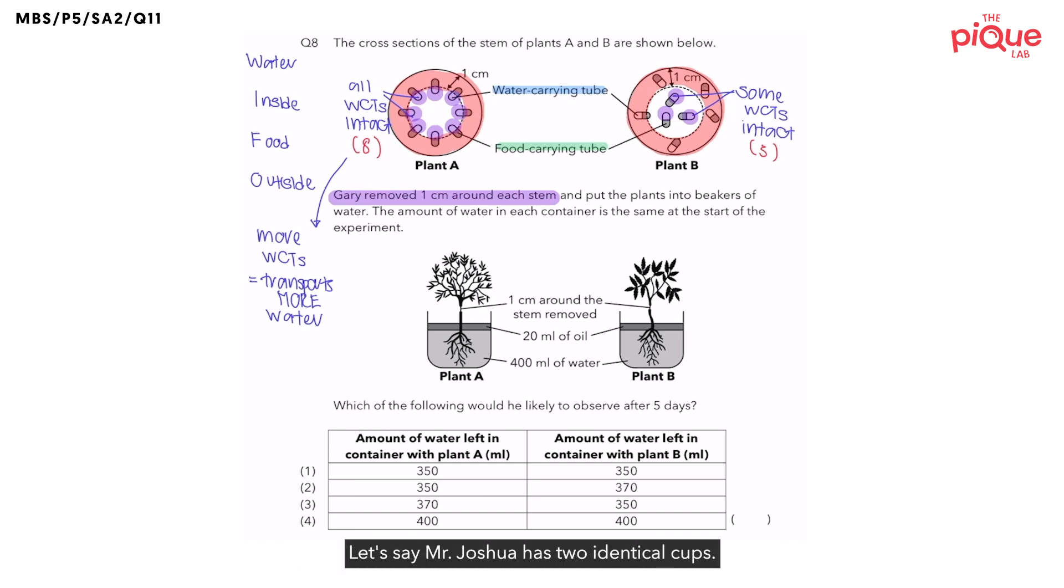Let's say Mr. Joshua has two identical cups. The cup on the left, let's call it cup A. And the cup on the right, let's call it cup B. Now, one day, Mr. Joshua is very thirsty. So, he pours an equal amount of grape fanta into both of these cups. Now, the difference between cup A and cup B is that for cup A, I have 3 straws like this. While cup B, I only have 1 straw.